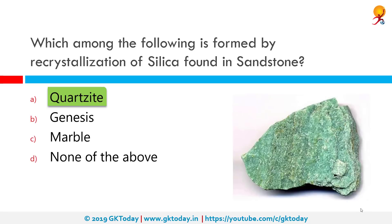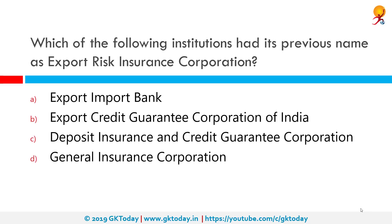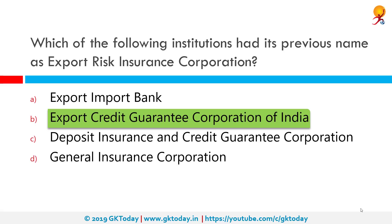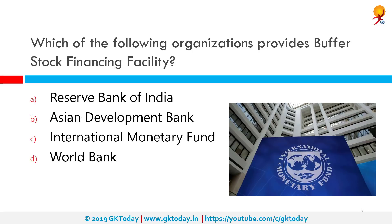Which of the following institutions had its previous name as Export Risk Insurance Corporation? The correct answer is Export Credit Guarantee Corporation of India. ECGC Limited is a company wholly owned by the Government of India, based in Mumbai, Maharashtra. It provides export credit insurance support to Indian exporters and is controlled by the Ministry of Commerce. It was initially set up as Export Risk Insurance Corporation in July 1957, and was later renamed Export Credit Guarantee Corporation of India.